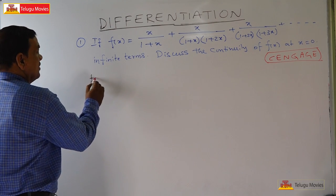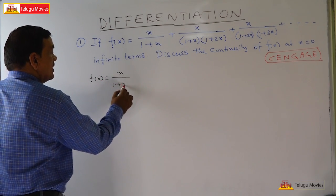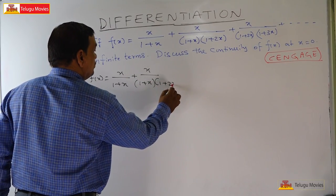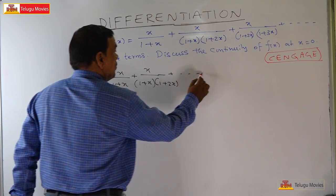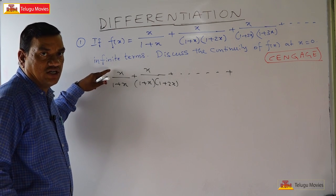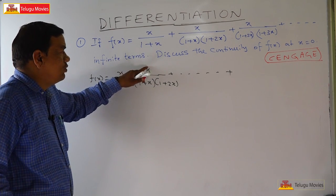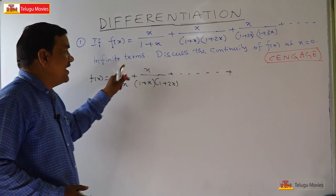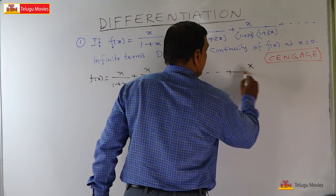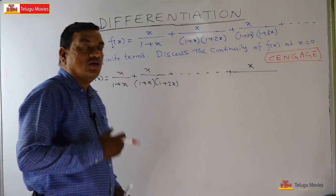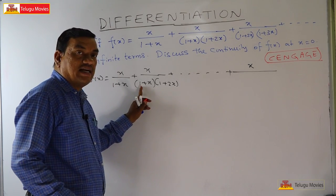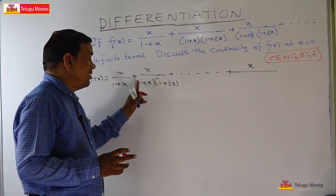Looking at f(x), every term is a fraction. In the numerator we always get x, so in the nth term also x should be there. Now concentrating on the denominator: the first term has (1+x), the second term has (1+x)(1+2x).